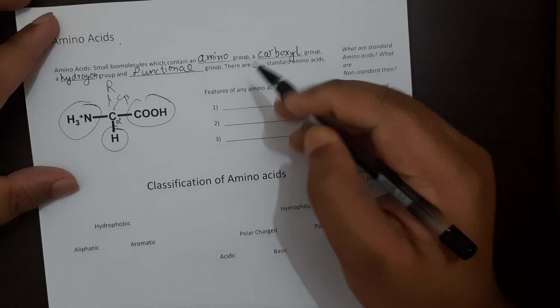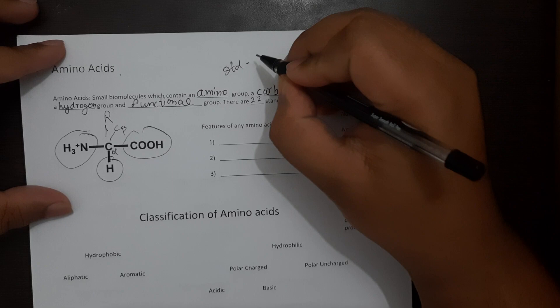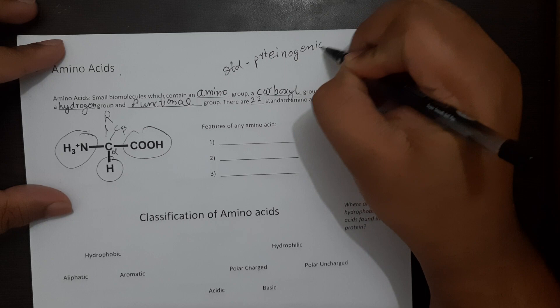So moving on, there are 22 standard amino acids. So one may ask what is a standard amino acid? Standard amino acids are those amino acids which are known as proteinogenic amino acids.